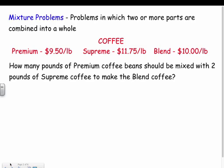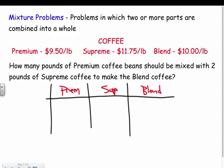The question is: how many pounds of premium coffee beans should be mixed with 2 pounds of supreme coffee to make a blended coffee at an exact cost? I'll set up a table with premium coffee, supreme coffee, and the blend. For the amounts column: we know the supreme is 2 pounds, so we put 2. We don't know how many pounds of premium, so we call it x. The blend is x plus 2.